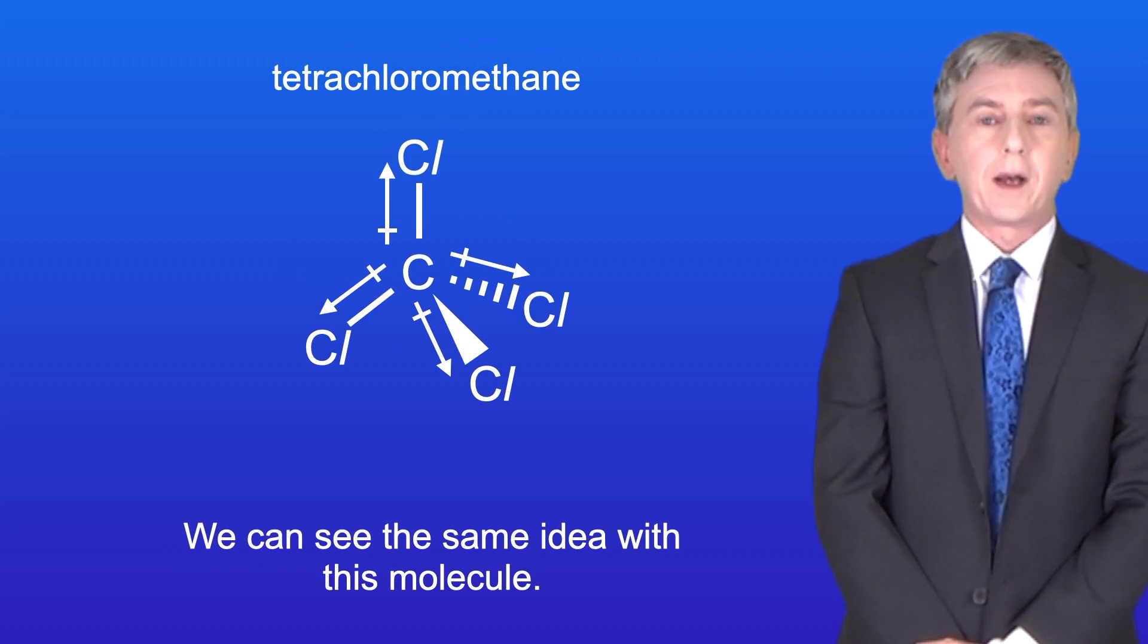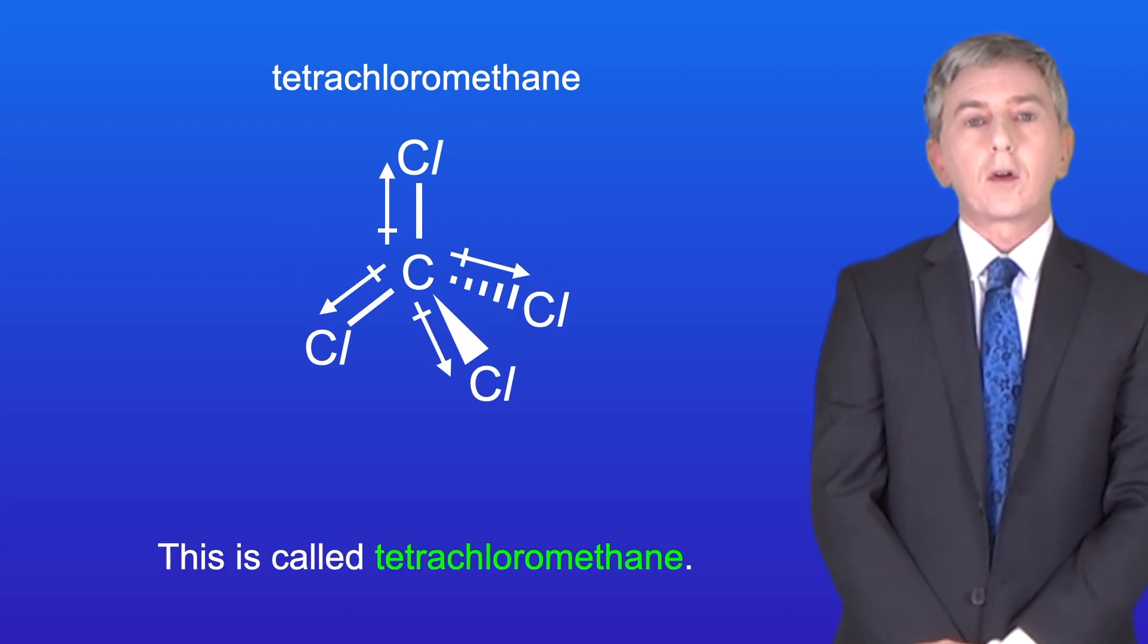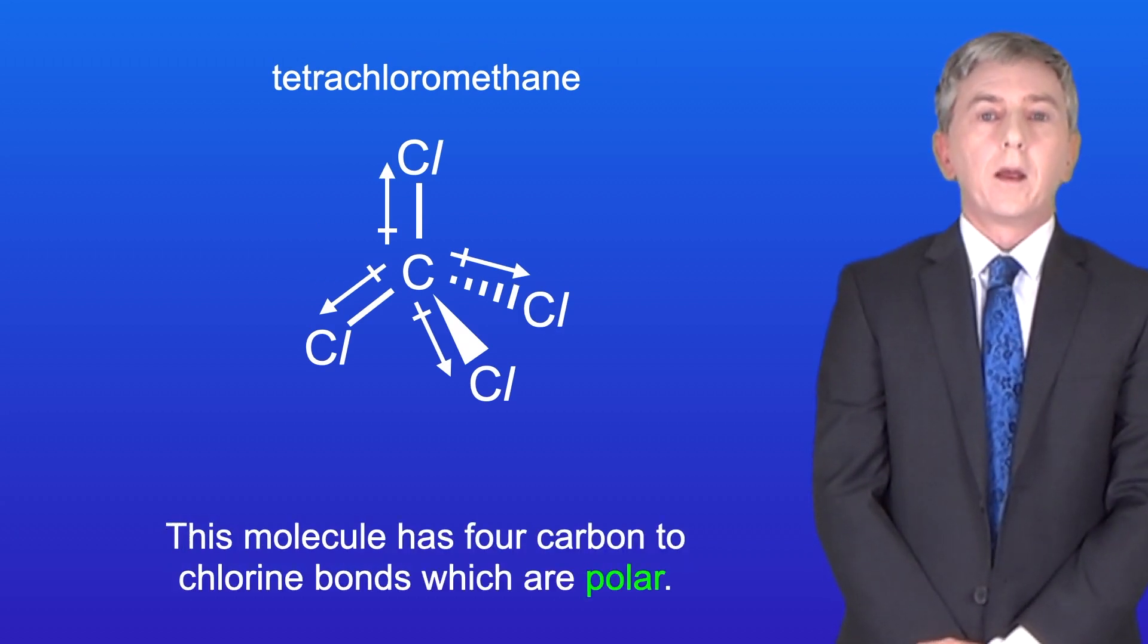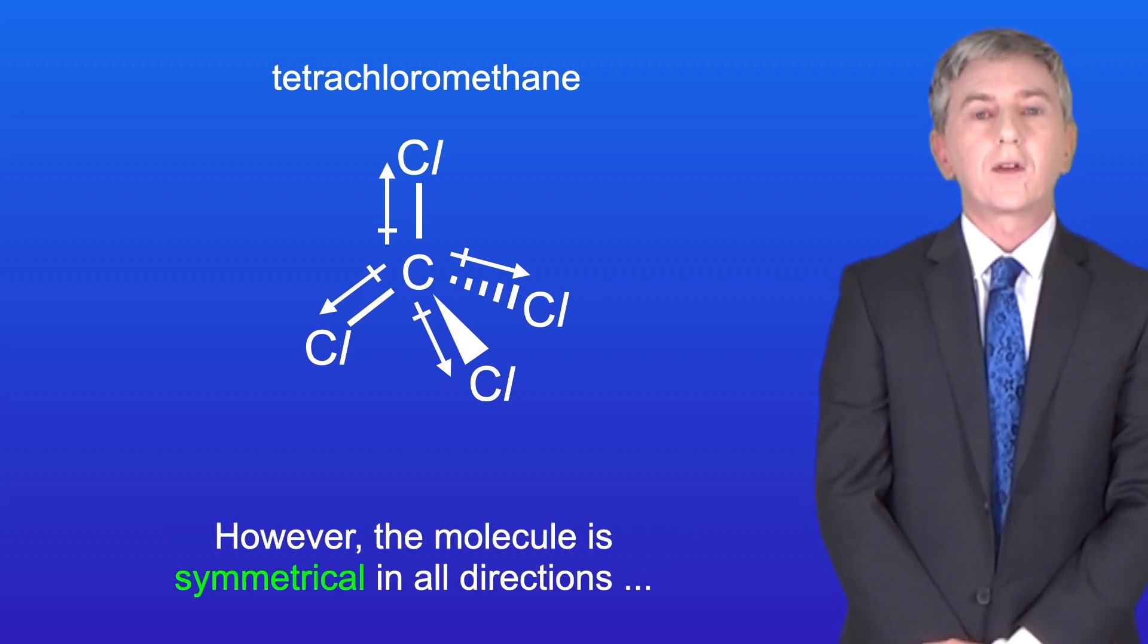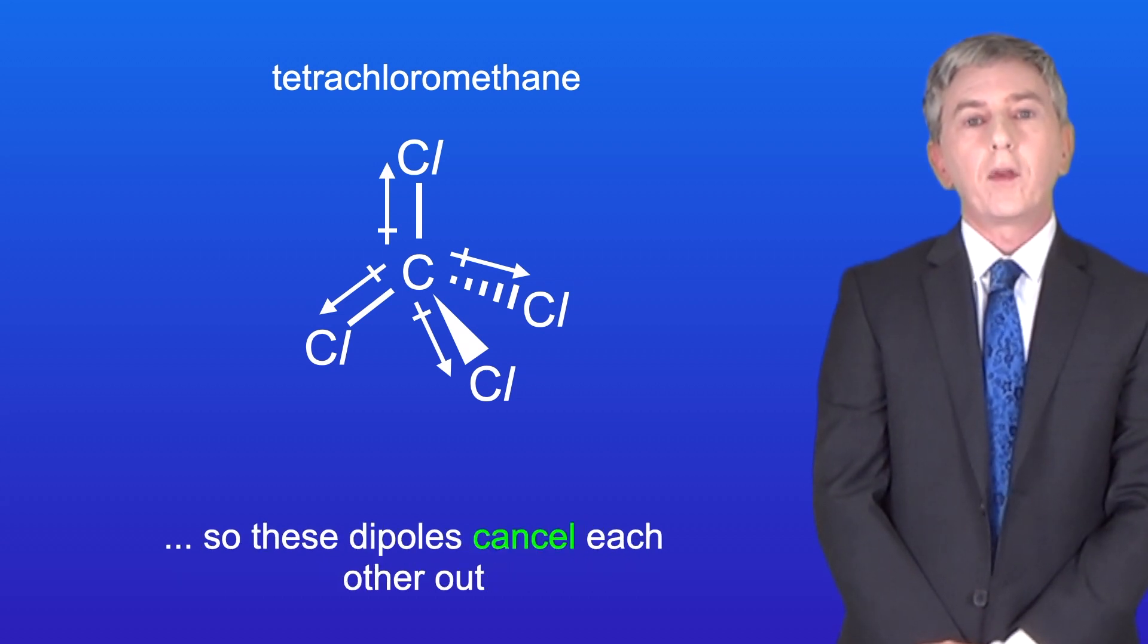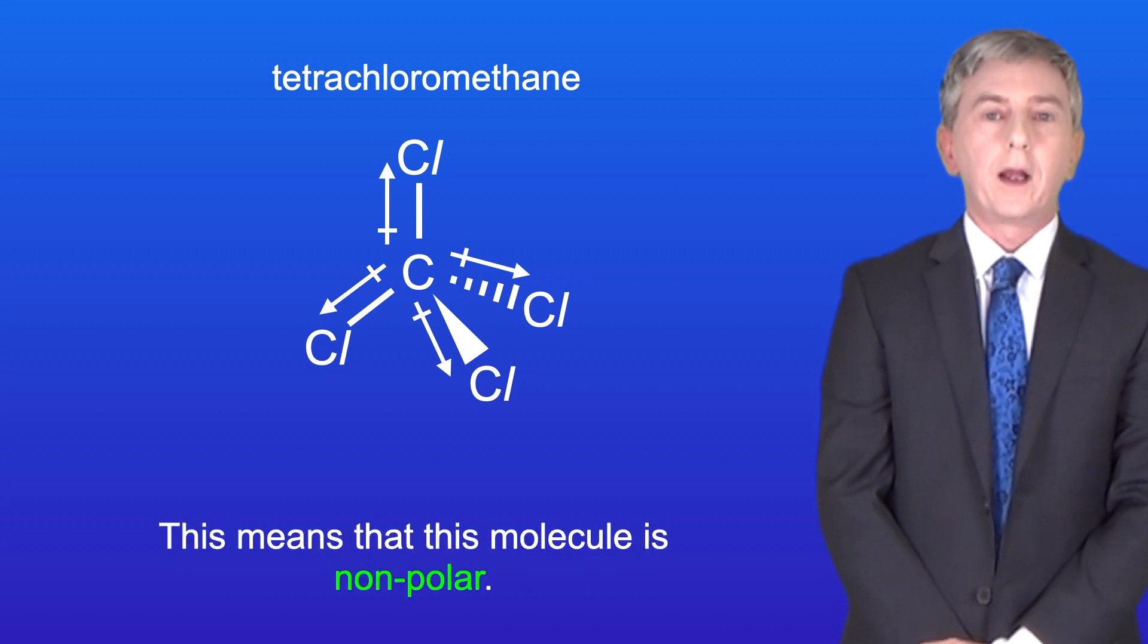We can see the same idea with this molecule. This is called tetrachloromethane. This molecule has four carbon to chlorine bonds which are polar. However, the molecule is symmetrical in all directions, so these dipoles cancel each other out, and this means that this molecule is non-polar.